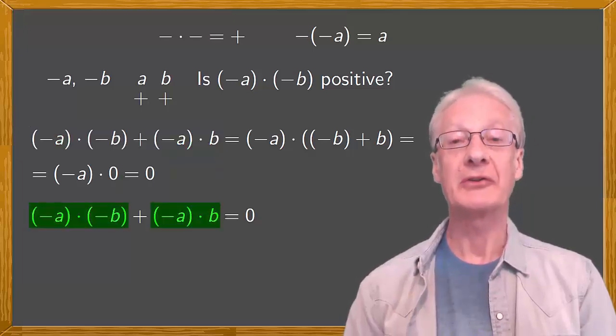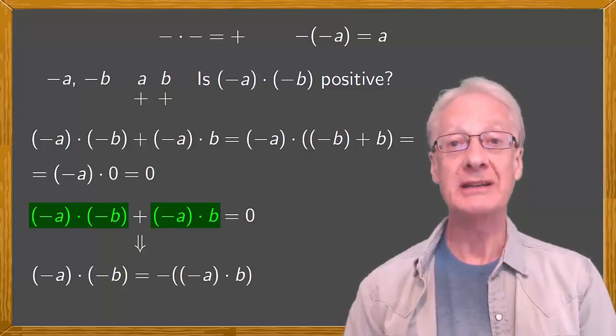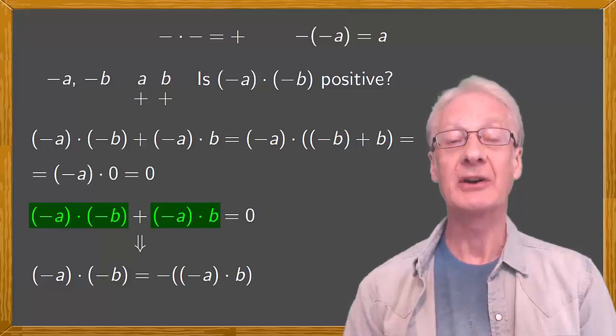One of the elements is the opposite of the other. Or, if we rearrange this, negative a times negative b equals the negative of negative a times b.